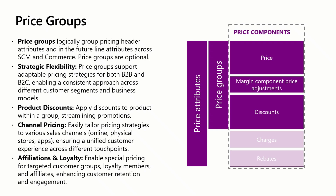Price groups allow businesses to logically group pricing header attributes such as channels, loyalty programs, and affiliations. These are just a few of the many available pricing attributes that can be bundled into a price group. While price groups are optional, they offer significant strategic flexibility for businesses looking to efficiently adapt their pricing strategy. For example, you can apply a product discount across a group of channels or customer segment to streamline promotions.